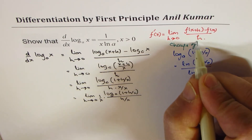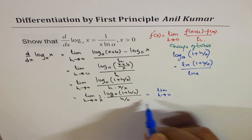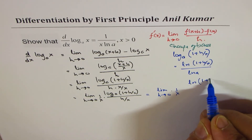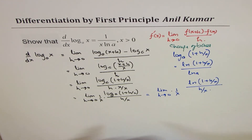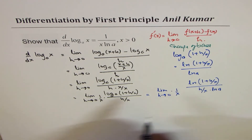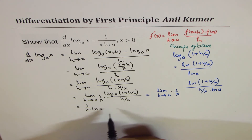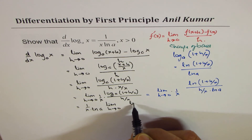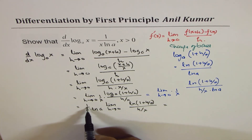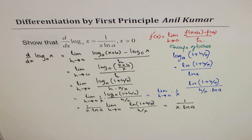Using this change of base formula, we rewrite the expression as 1 over x times the limit as h approaches 0 of ln(1 + h/x) over (h/x), all divided by ln(a). Since ln(a) is a constant and 1 over x is a constant, we bring them outside. We then have 1 over x times 1 over ln(a), multiplied by the limit as h approaches 0 of ln(1 + h/x) over (h/x). This limit equals 1, so the derivative is 1 over (x · ln(a)).